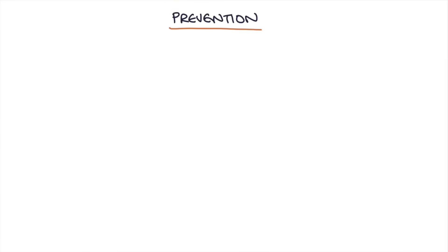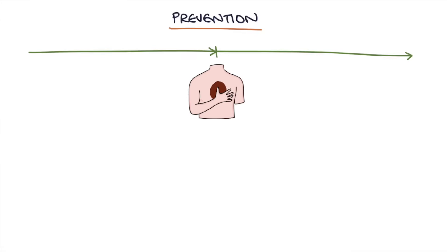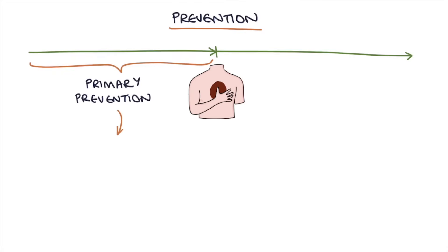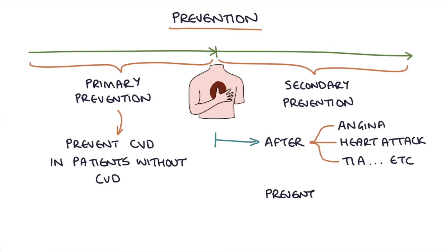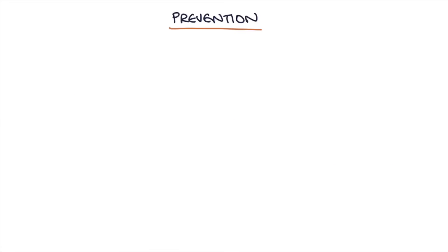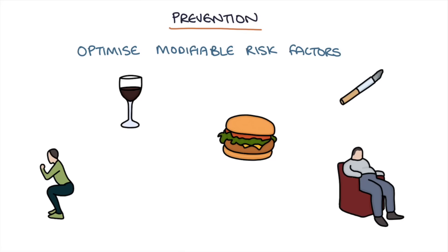How do we prevent cardiovascular disease? Prevention falls into two main categories. Firstly, primary prevention — trying to prevent cardiovascular disease in patients who have never had it. And secondly, secondary prevention — for patients who already have angina or have had a heart attack or TIA, trying to prevent it from happening again. The first step is to optimize any modifiable risk factors by giving advice on diet, exercise, weight loss, smoking, alcohol, and treating comorbidities such as achieving good control of their diabetes.